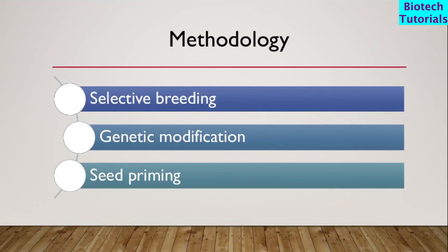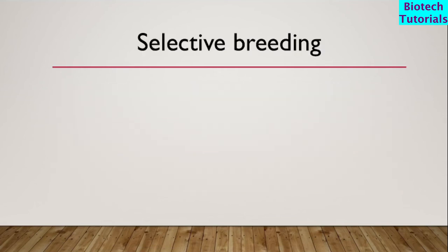Now, what methodology is used for biofortification? There are three methods by which we can increase the nutritional value of crops. First is selective breeding, second is genetic modification, and third is seed priming.